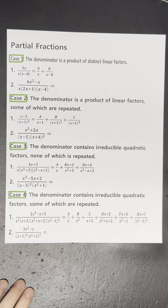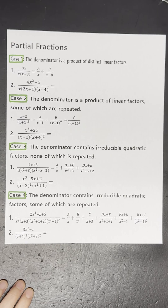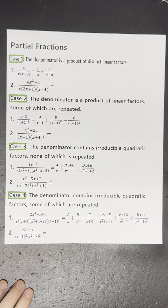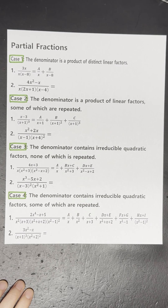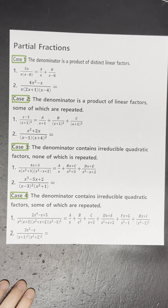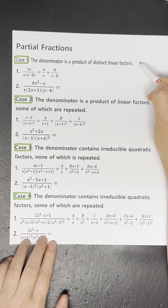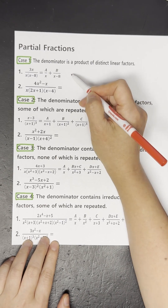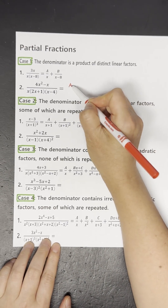When decomposing rational fractions into partial fractions, there are not always linear factors. Here are four cases. The first is where the denominator is a product of distinct linear factors.